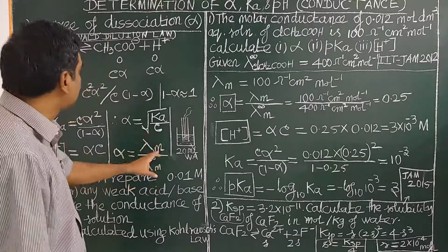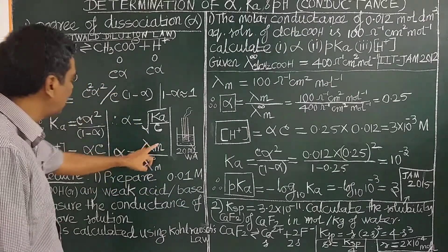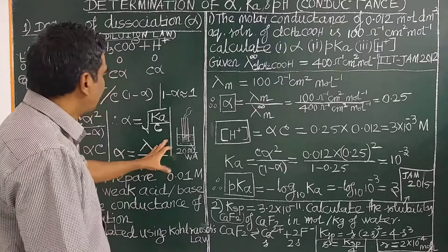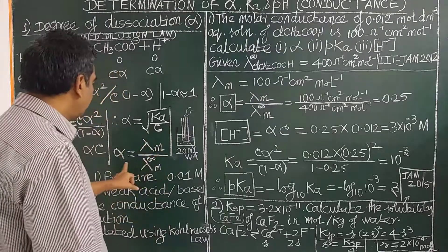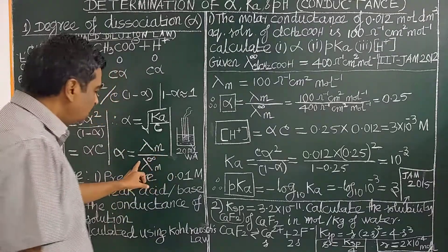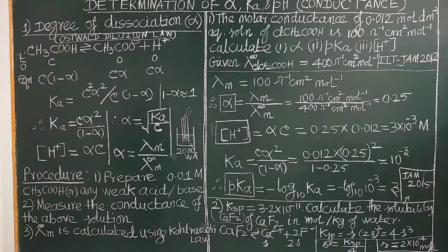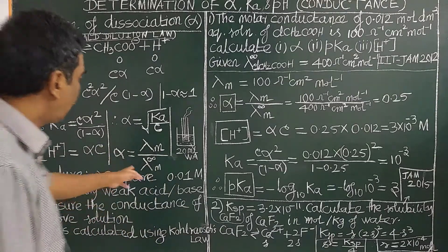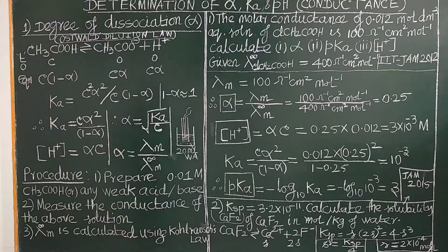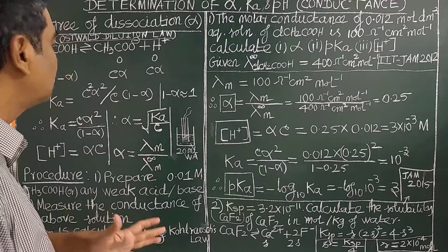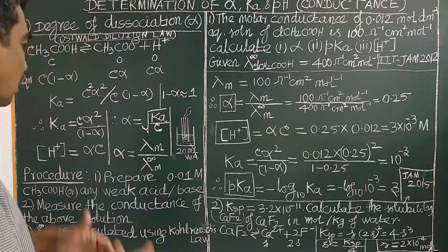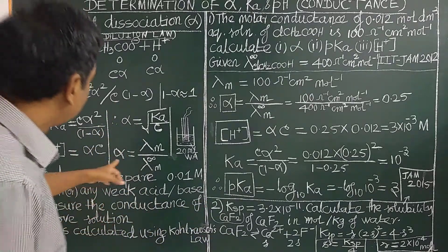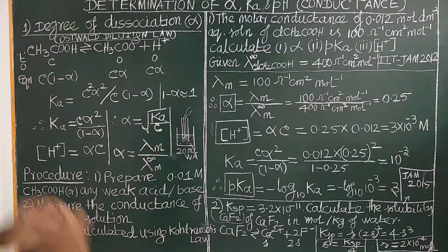Alpha equals the molar conductance at a given concentration divided by the molar conductance at infinite dilution: α = Λm / Λm∞. The molar conductance of acetic acid or any weak acid or weak base at infinite dilution is calculated using Kohlrausch's law.